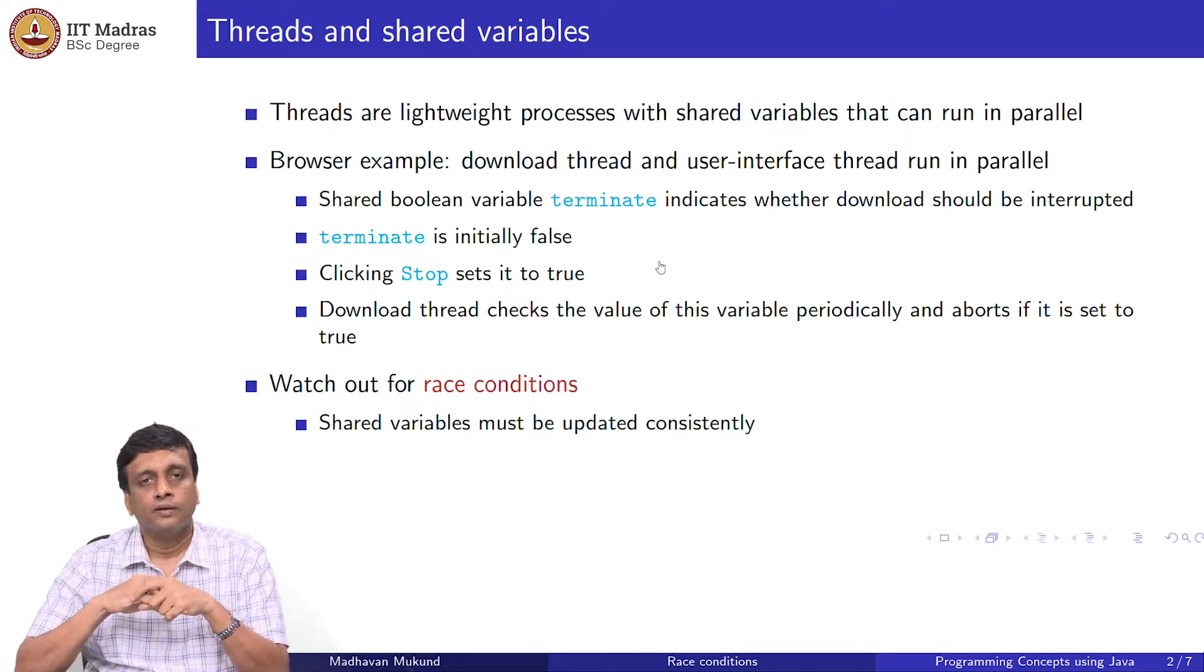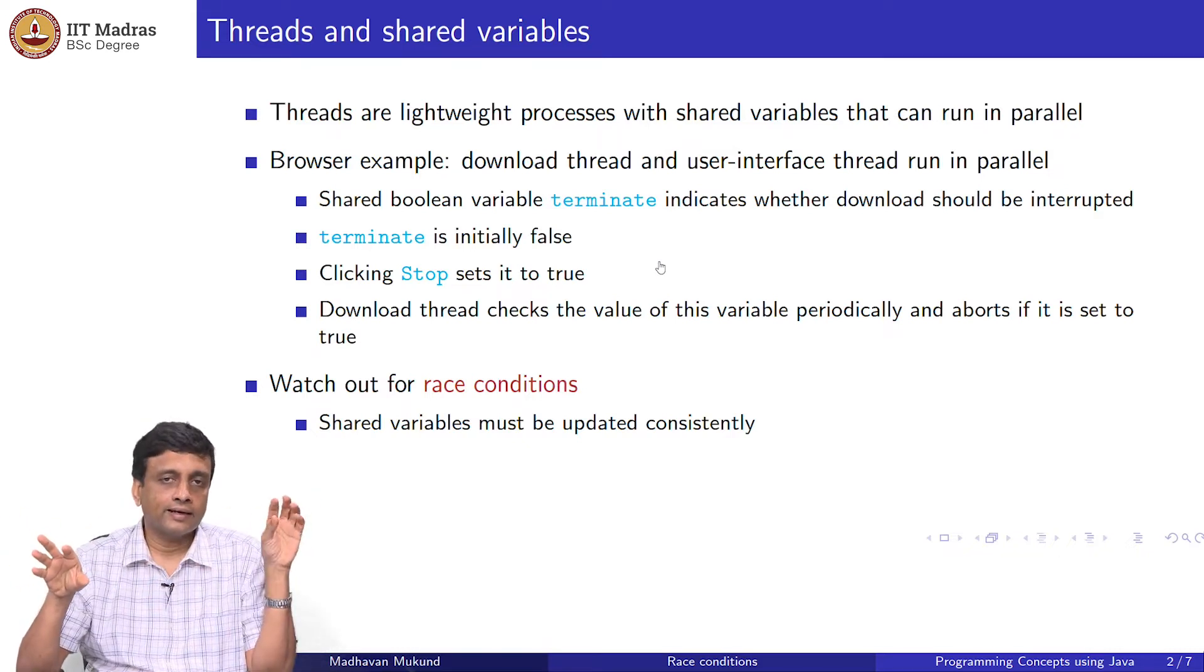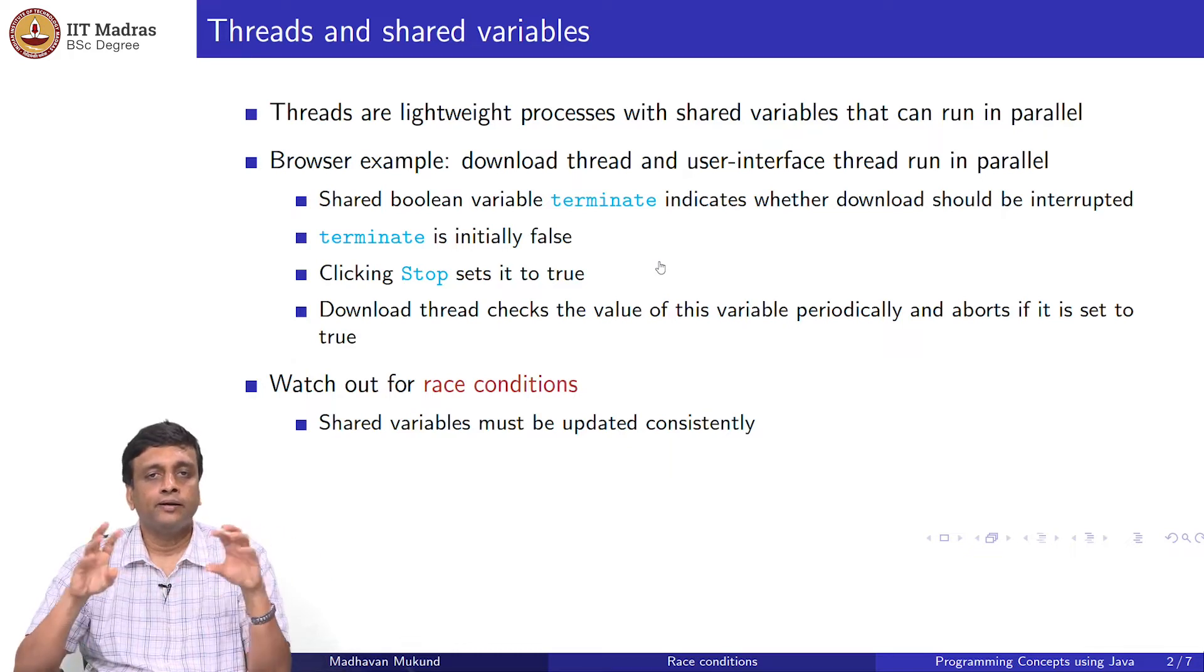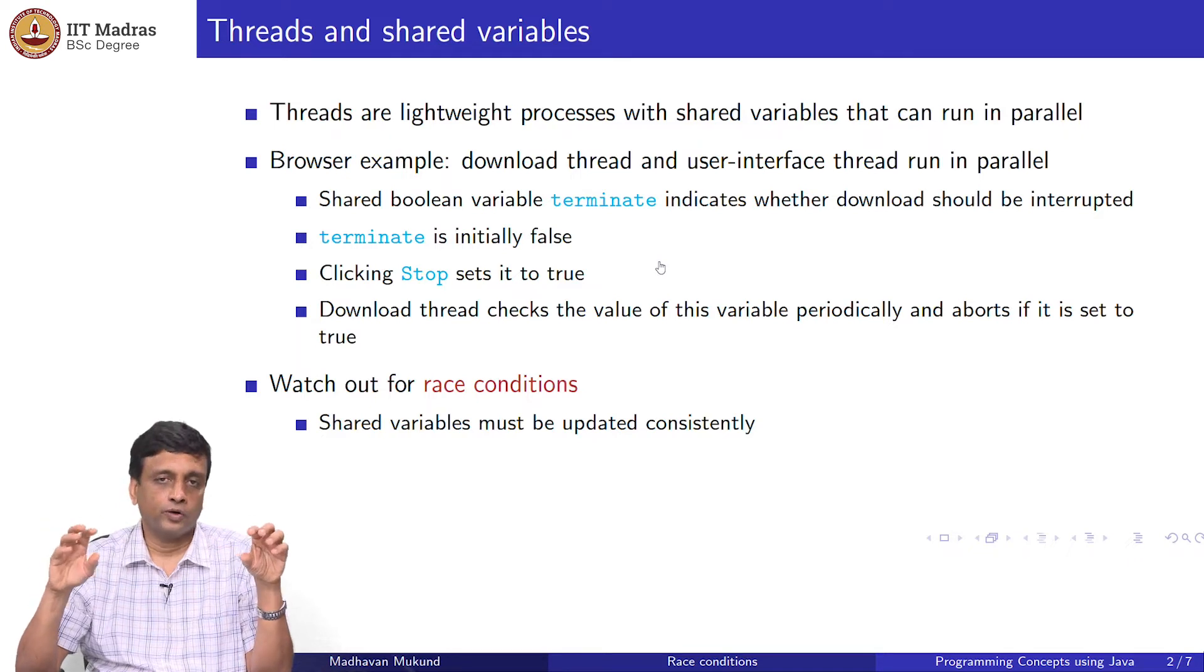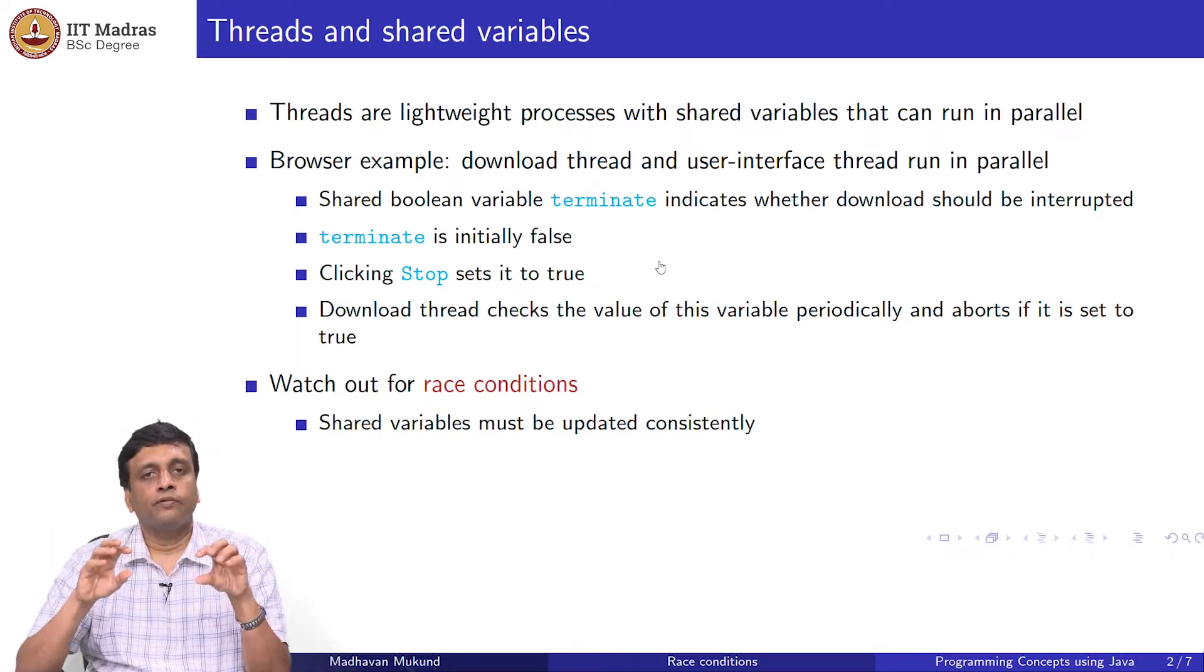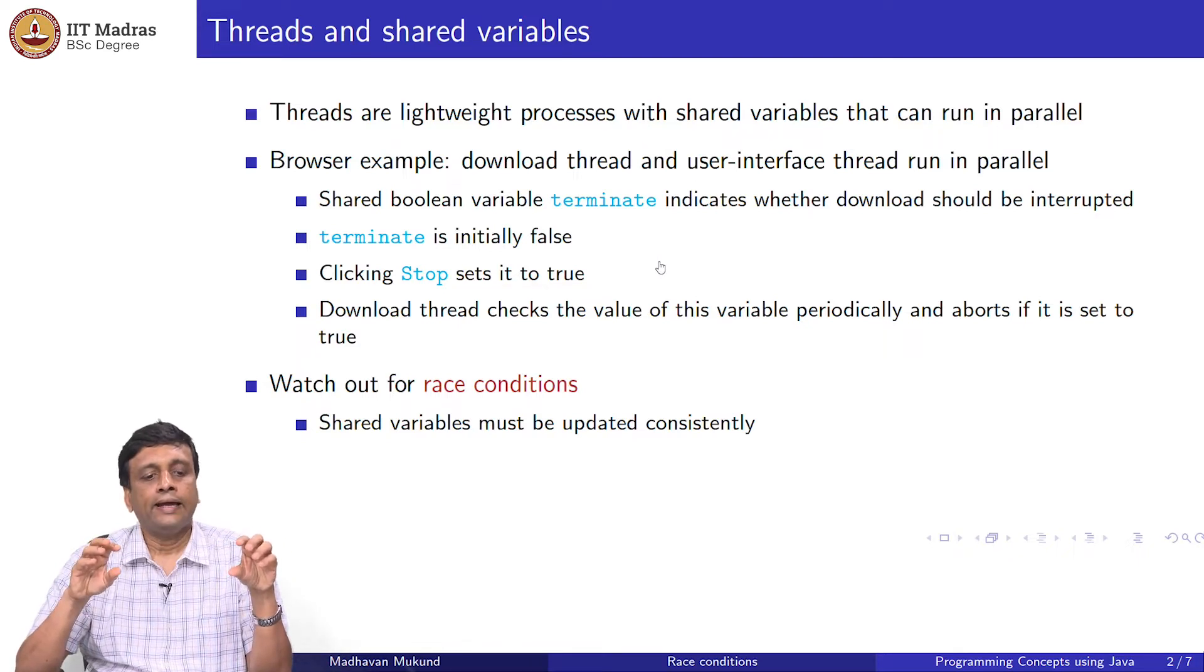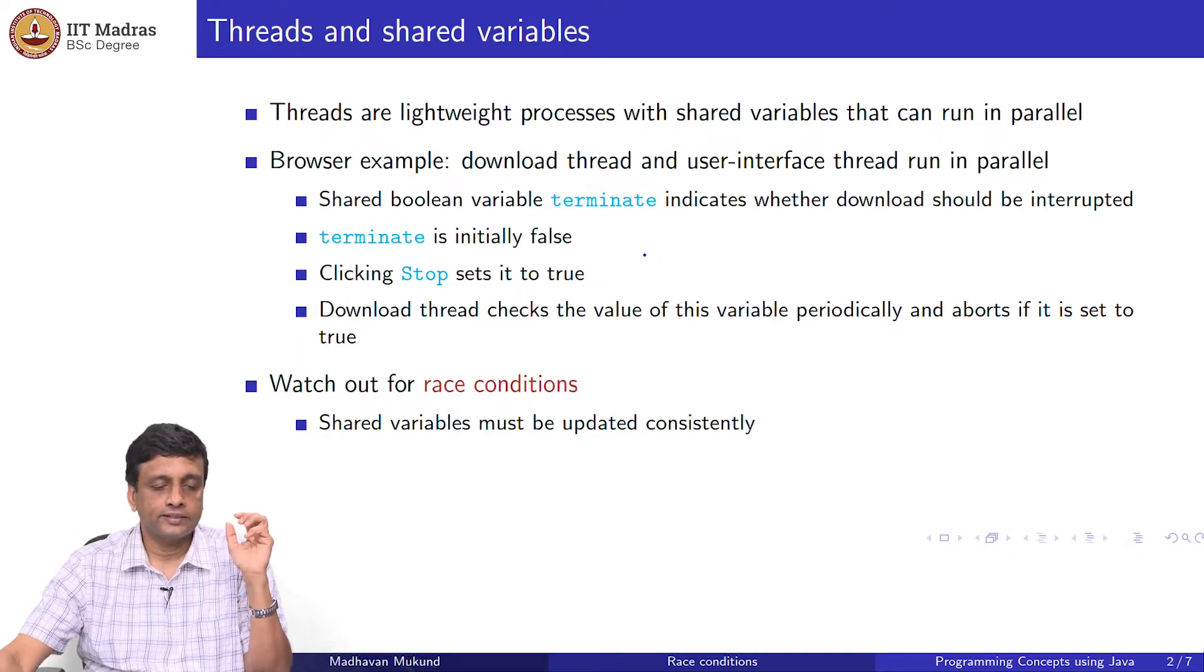We took this example of a browser, where the download thread and the cancel thread would interact through a Boolean variable terminate. By polling this variable, the download thread would decide whether to stop or not. This kind of concurrent access to a variable can create some inconsistency, and this is what is called a race condition.